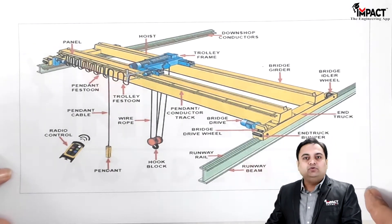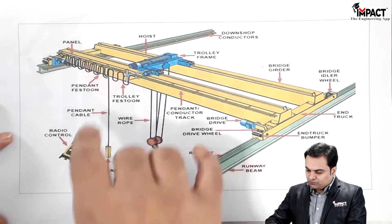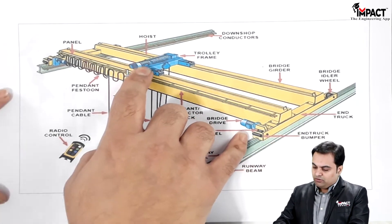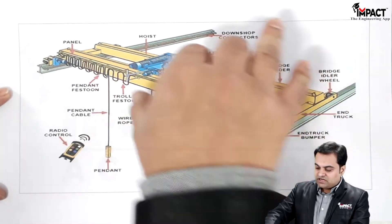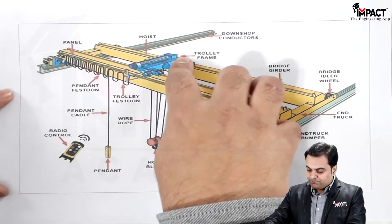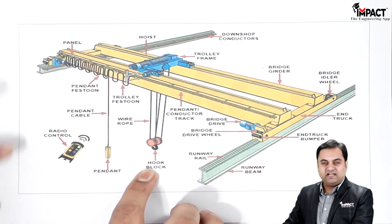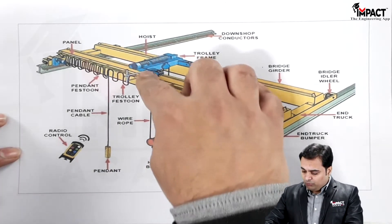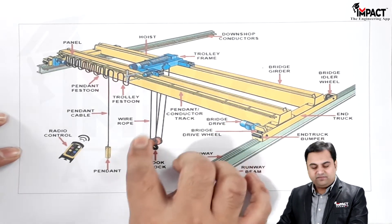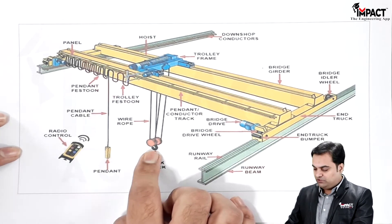Here is the diagram of the EOT crane. As we can see, it consists of a motor and drum arrangement at the top. This arrangement is the traversing mechanism, which gives power through ropes to the snatch block. The rope passes through the rope sheave inside the snatch block, and there is a hook at the end to which the load is attached.